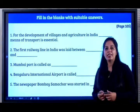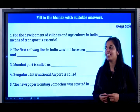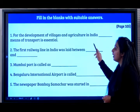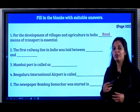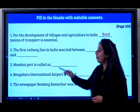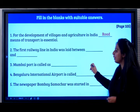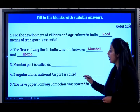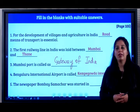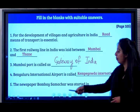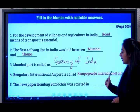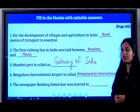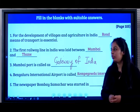This brings us to the end of the chapter. Let's do the back exercises. For the development of villages and agriculture in India, road transport is essential. The first railway line in India was laid between Bombay and Thane. Mumbai Port is called the Gateway of India. Bengaluru International Airport is called the Kempegowda International Airport. The newspaper Bombay Samachar was started in the year 1822.